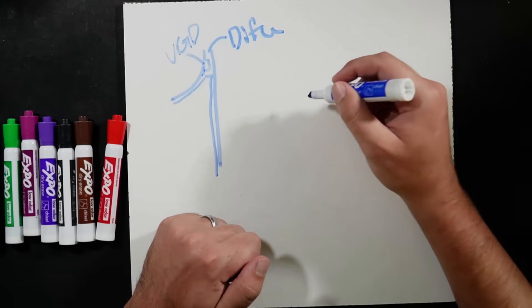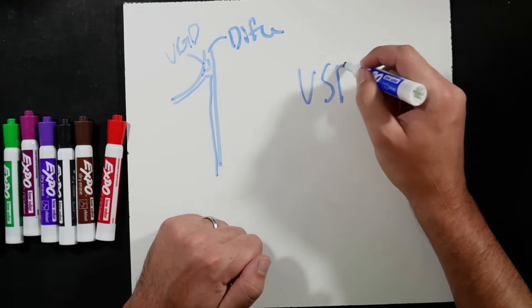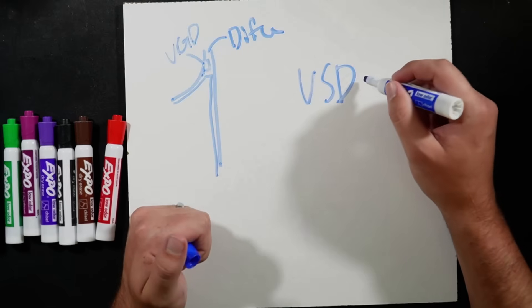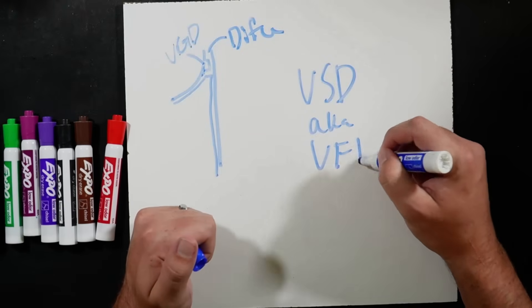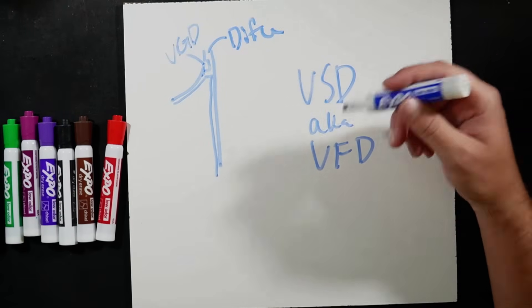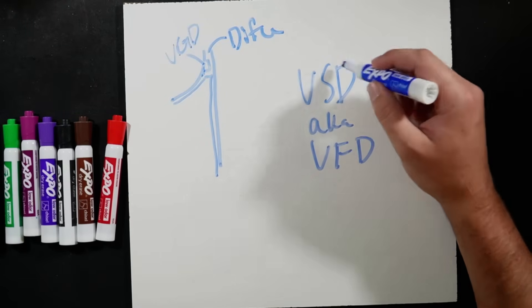Now a VSD is just a drive. So a VSD is just a VFD, aka VFD. So York says VSD, variable speed drive, variable frequency drive. It's just York being York.